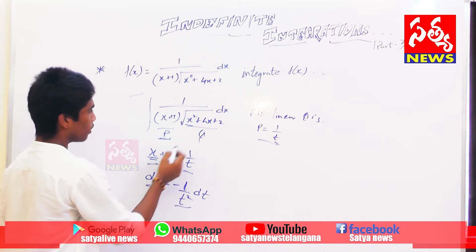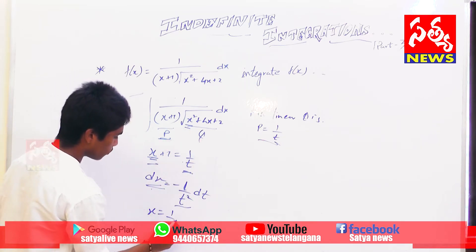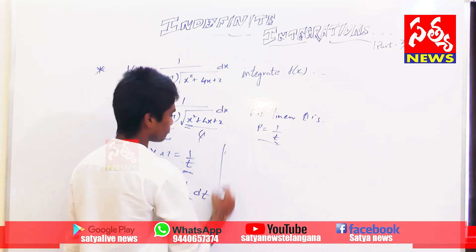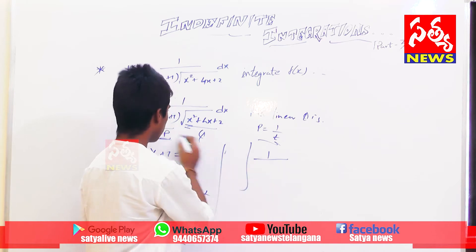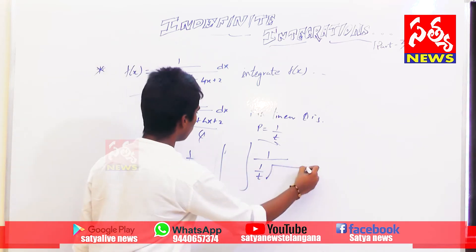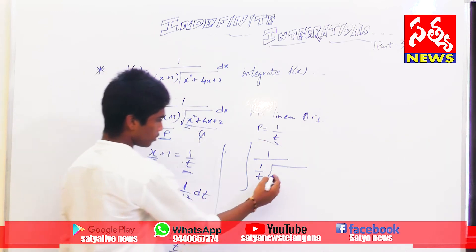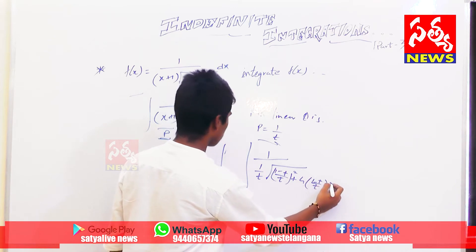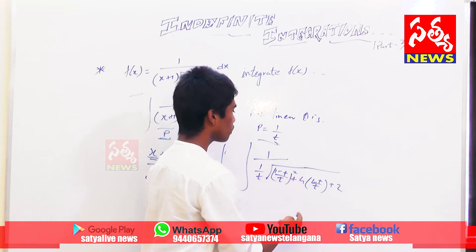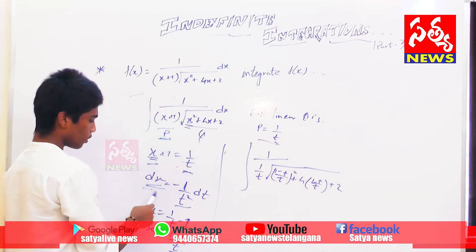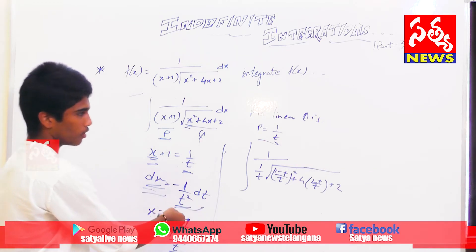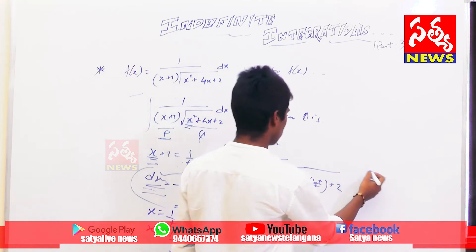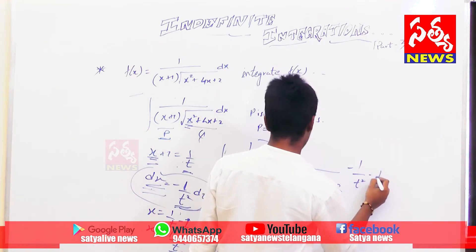Next, we write all x terms in terms of t. So x equals 1/t minus 1, which equals (1 minus t)/t. Also, 1 divided by (x+1) is 1/t. Many students forget the step of substituting dx as minus 1/t² dt — this is a compulsory step, and if you forget it, the problem will go wrong.